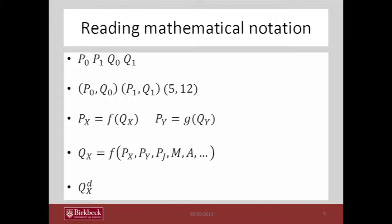In the next line, second from bottom, Qx equals f(Px, Py, Pj, M, A...). This is the mathematician's way of showing you that the quantity of product X is a function of many different variables.